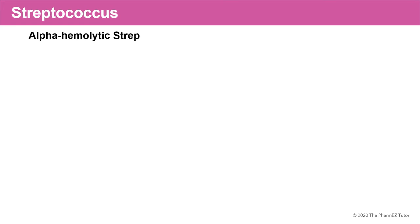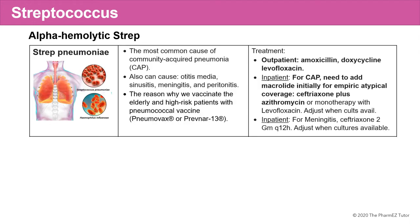Let's talk about the alpha-hemolytic Strep. There are two: Strep pneumoniae and Strep viridans. Strep pneumoniae is the most common cause of community-acquired pneumonia. It can also cause otitis media, sinusitis, meningitis, and peritonitis, so it's frequently seen in human infections. This is why we vaccinate the elderly and high-risk patients with pneumococcal vaccine — either Pneumovax or Prevnar.